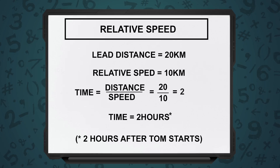Tom has to overtake this lead at a relative speed of 10 km per hour. We know distance equals speed multiplied by time. The distance — the lead — is 20 km, to be covered at a relative speed of 10 km per hour. So when we divide that, we get time = 2 hours.